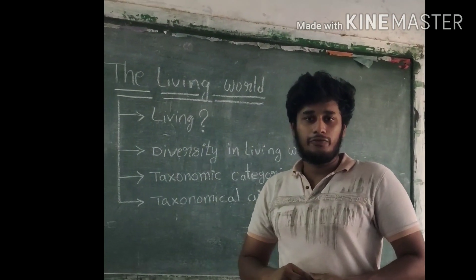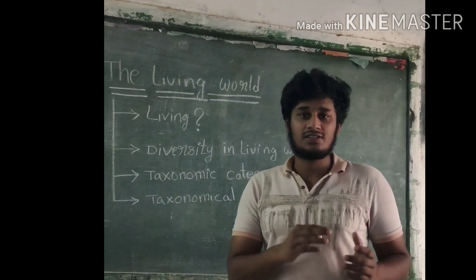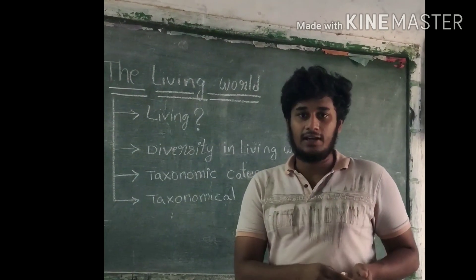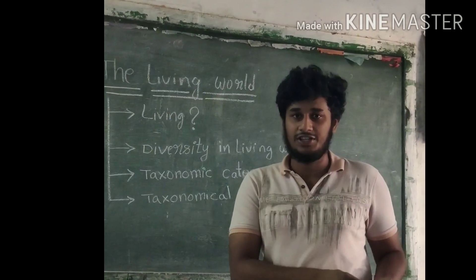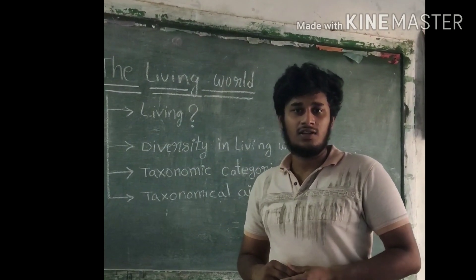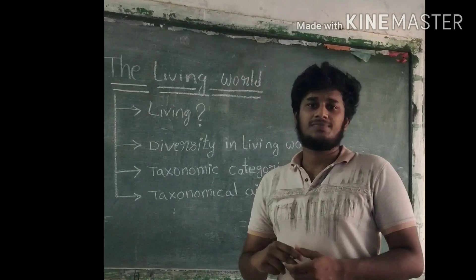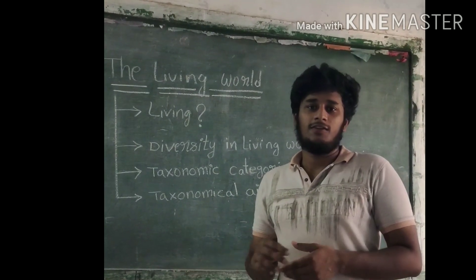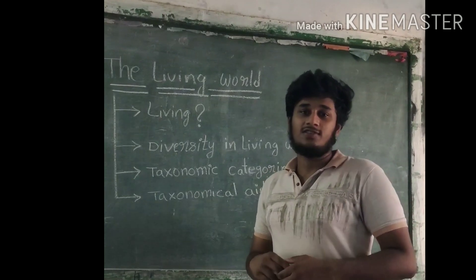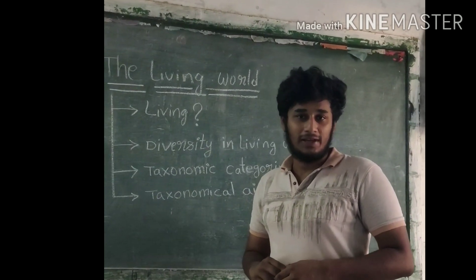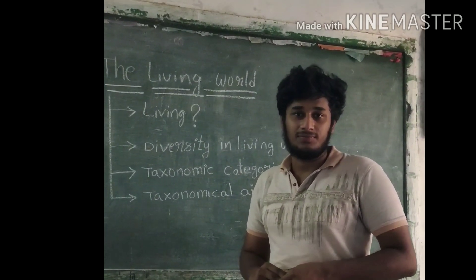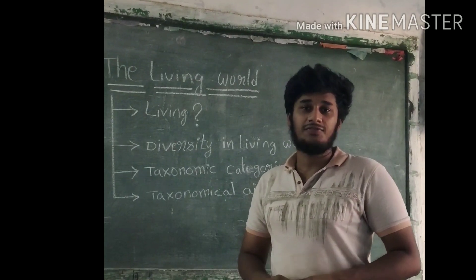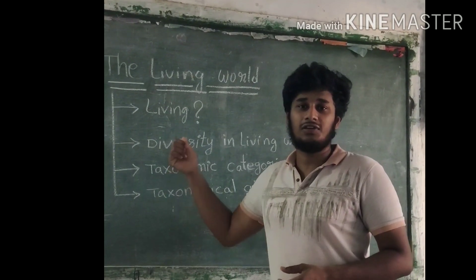So the first concept is 'living.' How we can say an organism is living or non-living? Based on a few defining characters, it is differentiated. The defining characters of a living organism are growth, reproduction, consciousness, self-replication, and metabolism. These are the defining characters of a living organism.